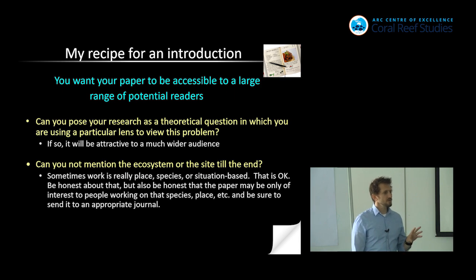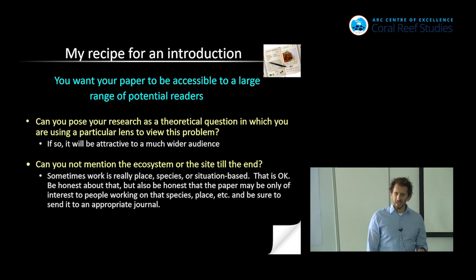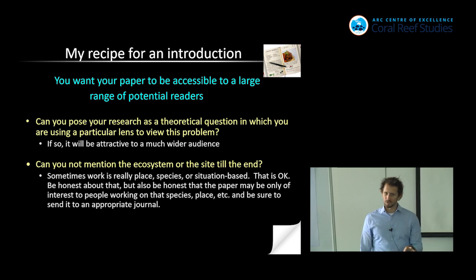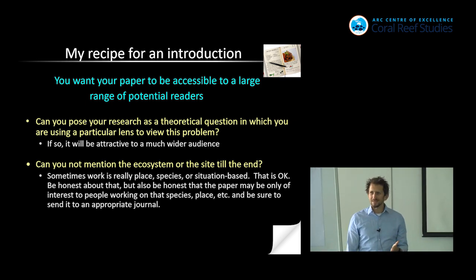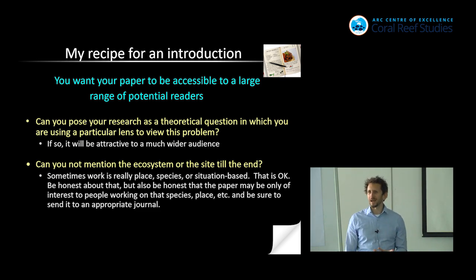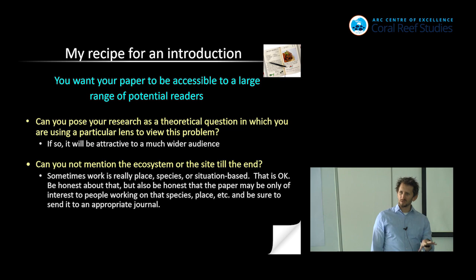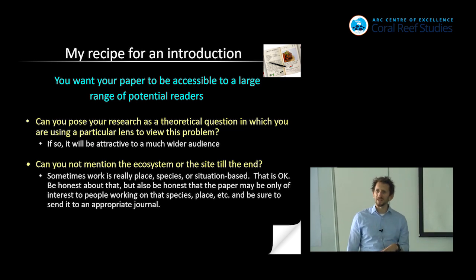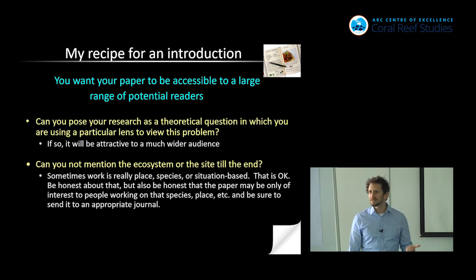If your paper starts with 'in Kenya,' you realize that's not going to be interesting to that many people. Sometimes work really is place-based — a lot of cultural geography and anthropology is about place, and that's okay. But recognize that it's probably of more interest to people interested in that place, and choose a journal that's appropriate for that. Similarly, if it's about a particular species and only relevant to that species, you'll need to pick a really specific journal interested in that species.